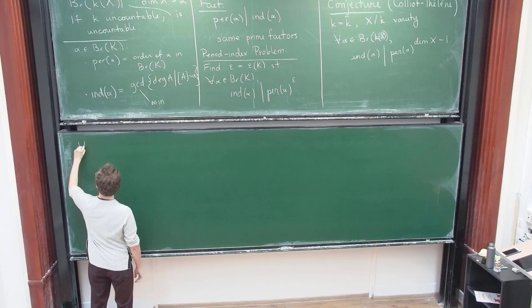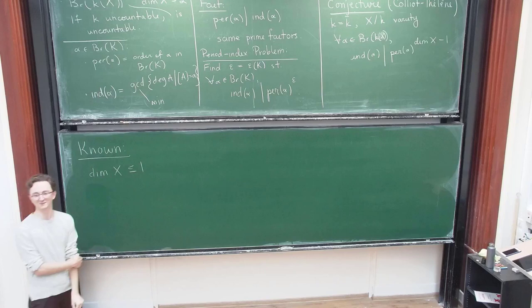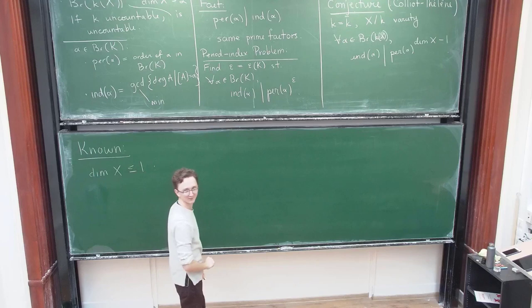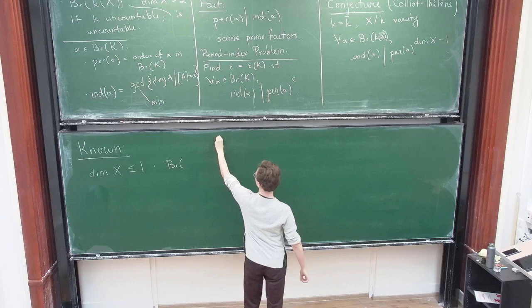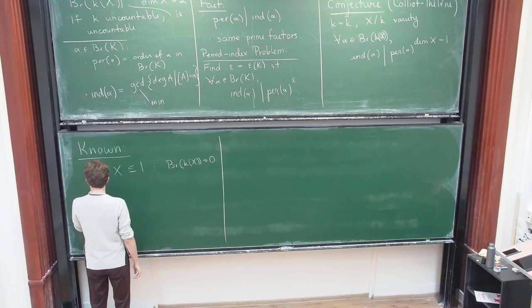So let me tell you what's known. It's very easy to say what's known. So here's one that we could all do together. If the dimension of X is less than or equal to one, right? This one's pretty good. Then you have to check what the period and the index are. They're both one. And that's good because the Brouwer group of the function field will be zero. By Tsen's theorem, we talked about this.